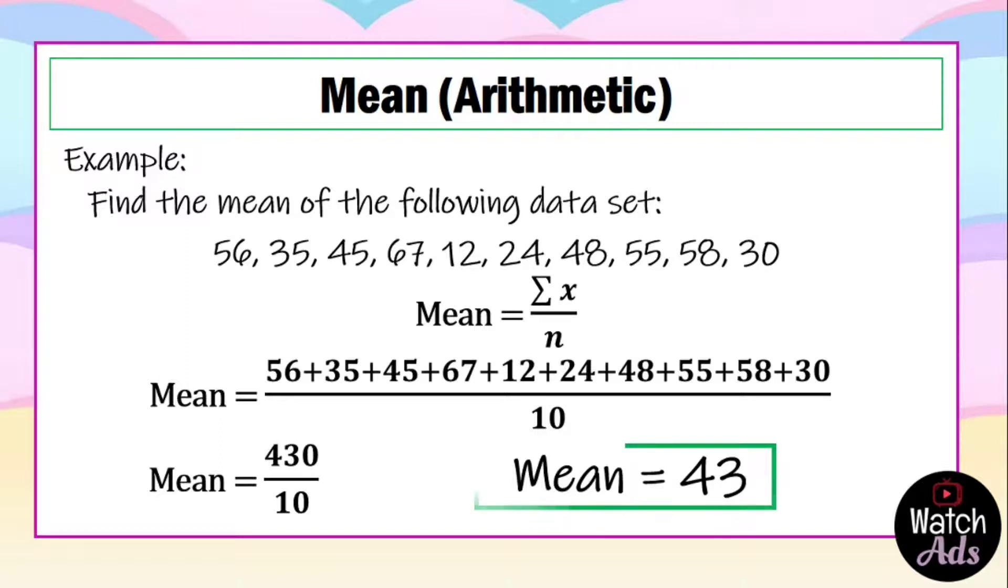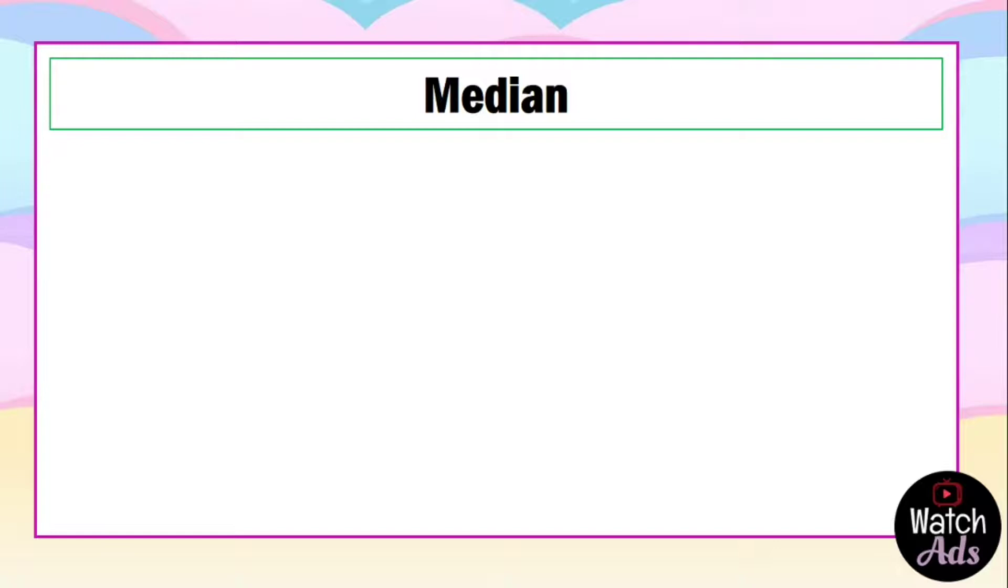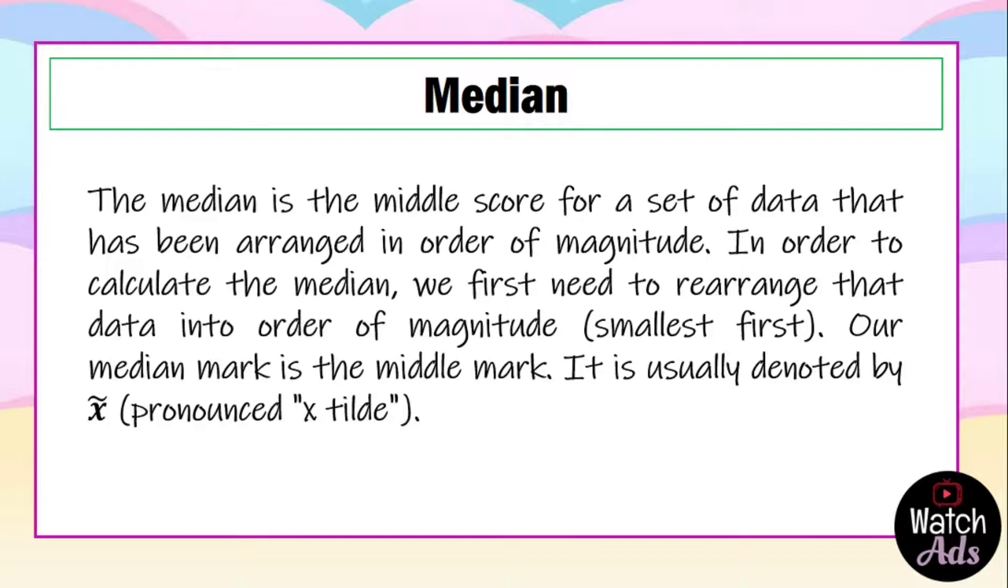Our second measure of central tendency is the median. The median is the middle score for a set of data that has been arranged in order of magnitude. In order to calculate the median, we first need to rearrange that data into order of magnitude, that is from smallest first. Our median mark is the middle mark. It is usually denoted by x̃.